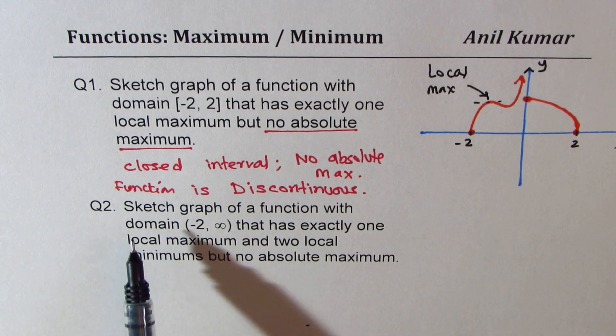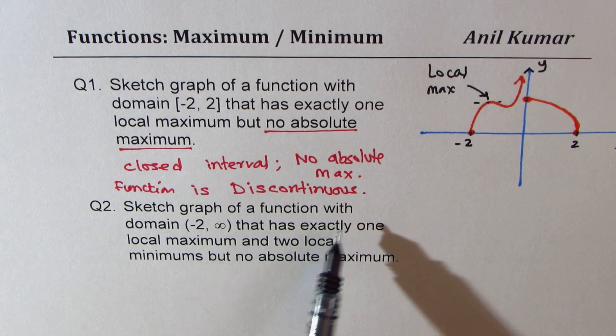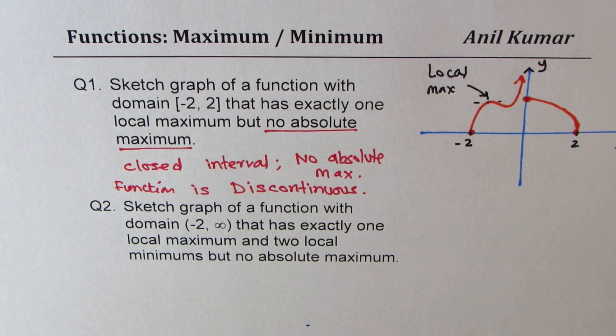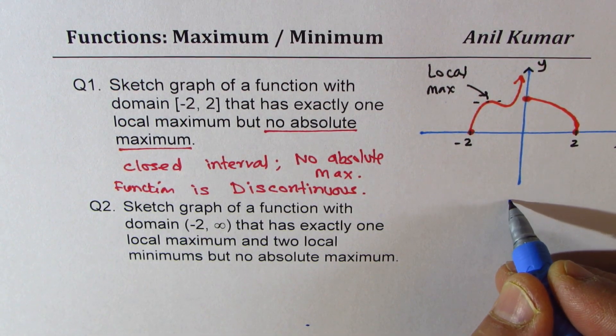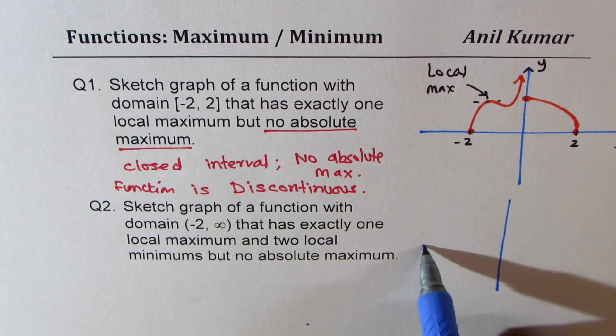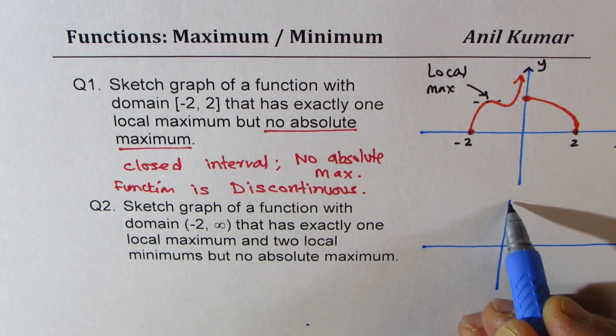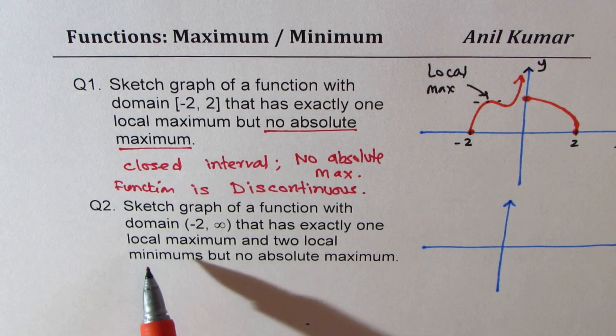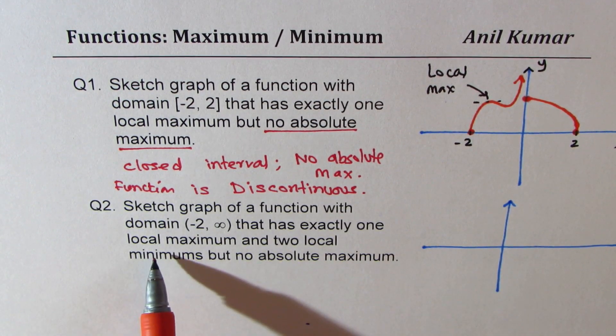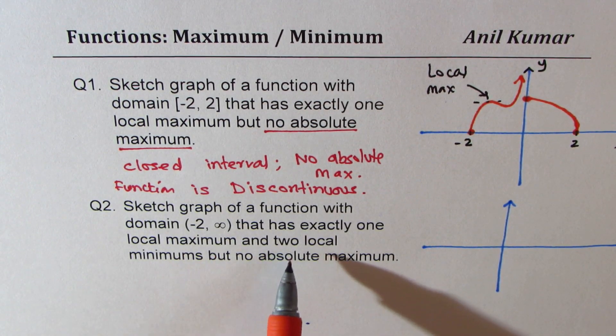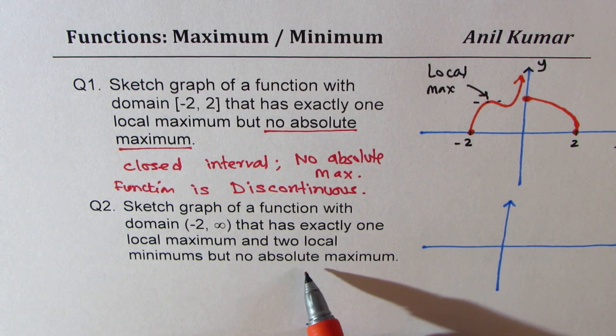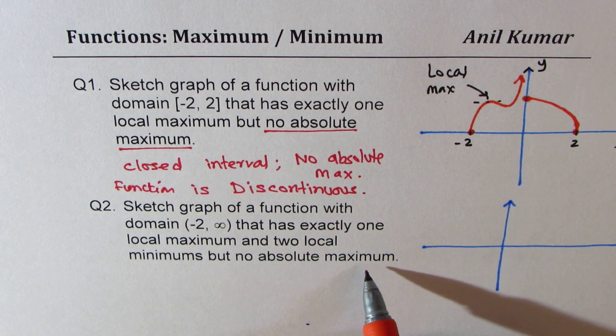Now question number two is sketch a graph of a function with domain minus two to infinity. So in this particular case it is an open domain, minus two to infinity, that has exactly one local maximum and two minimums. So there are two minimums in this case. But no absolute maximum.